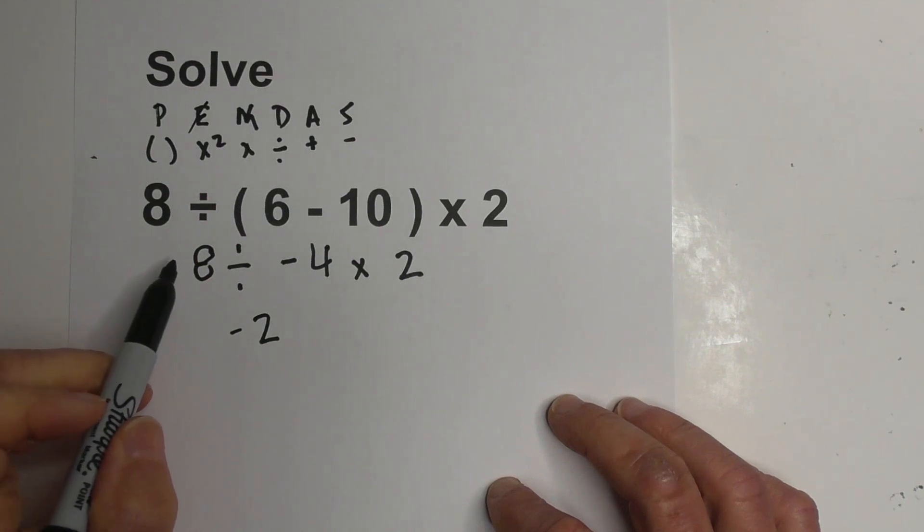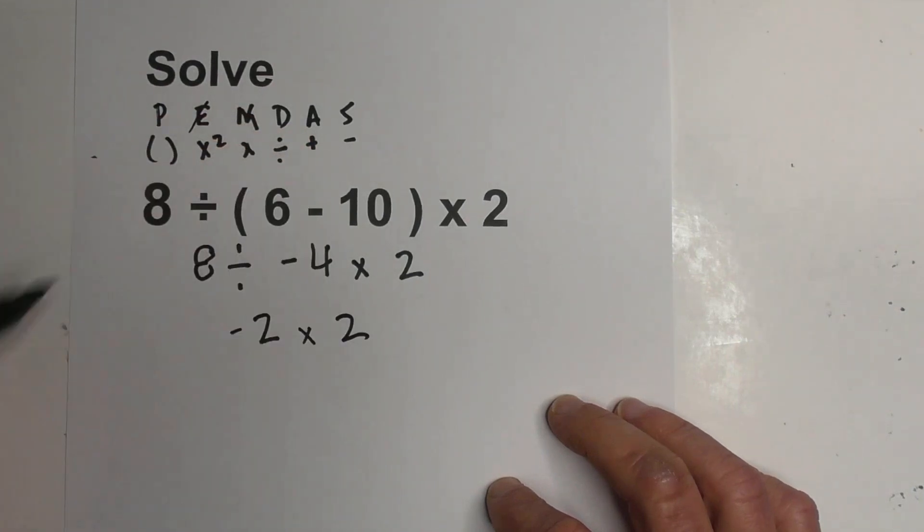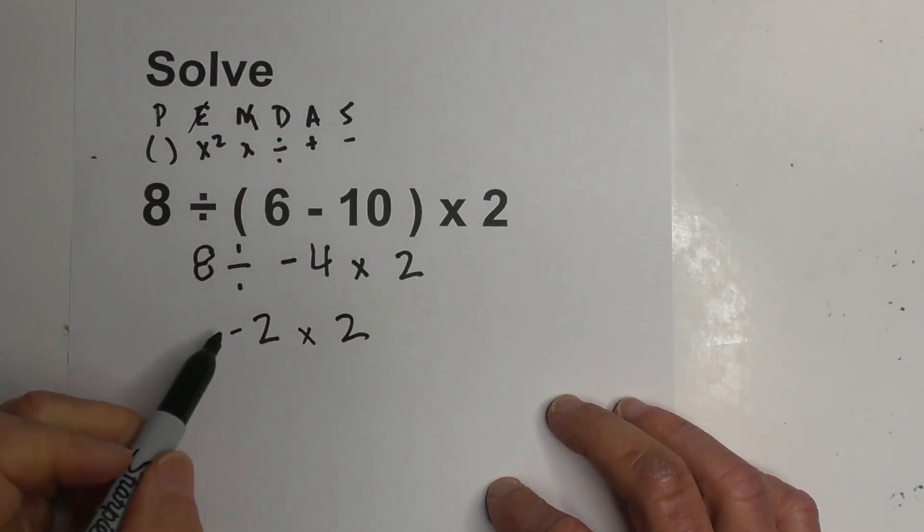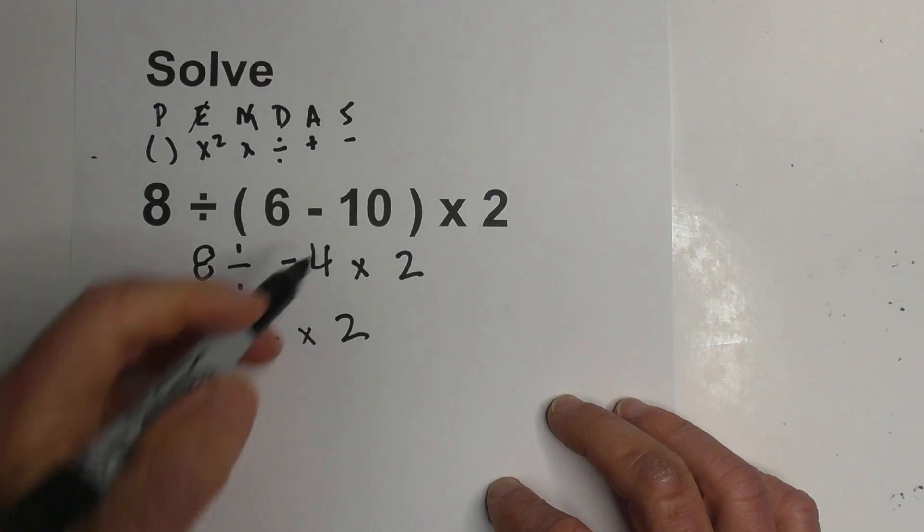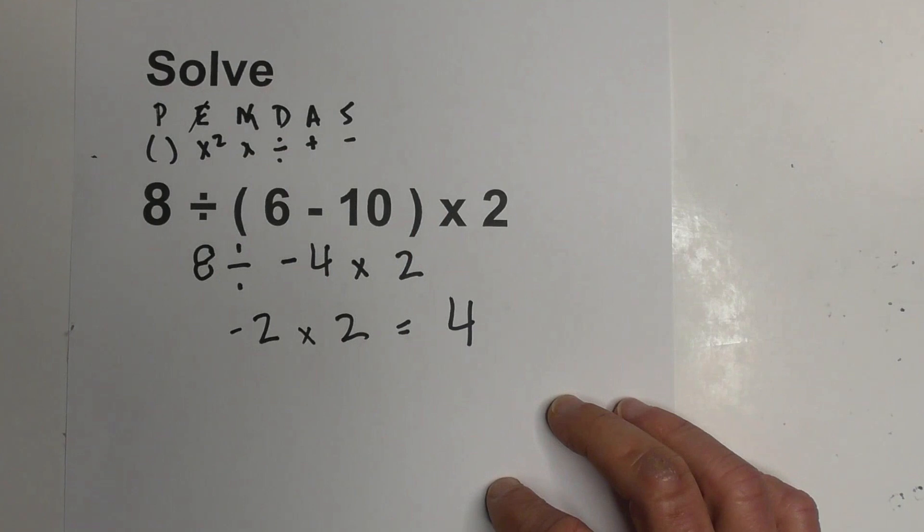Because remember, if you have same signs, it's positive. If you have opposite signs, it's negative. And then we're going to bring down the multiplication. So now we have a negative 2 and a positive 2. And that becomes 4. What's the sign going to be?